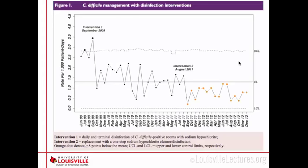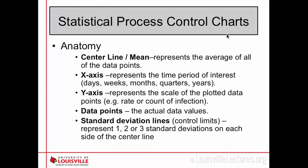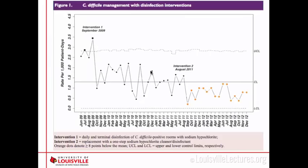You may remember seeing this SPC chart earlier when Dr. Kariko was speaking. This is an example of an SPC chart produced for C. diff management that was published here at the university. There's still a center line, but this time it's the mean rather than the median. Your x-axis, y-axis, and data points are still the same, but you also have standard deviation lines — the UCL (upper control limit) and LCL (lower control limit), which are three standard deviations out.